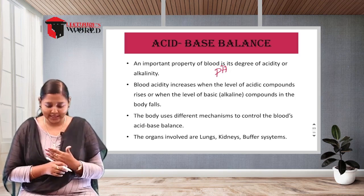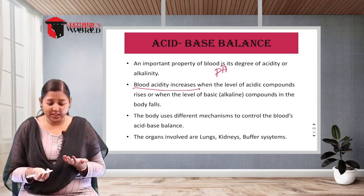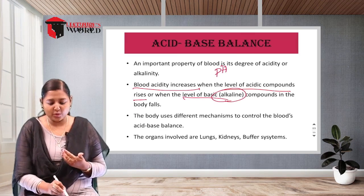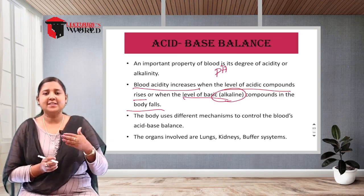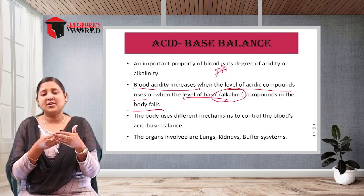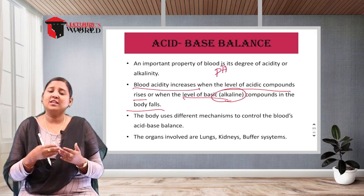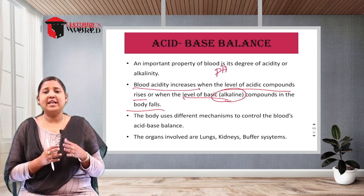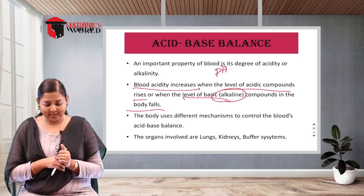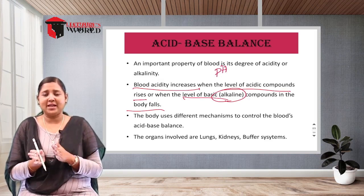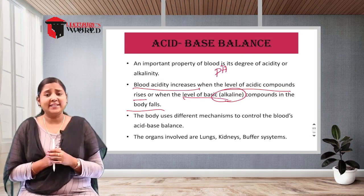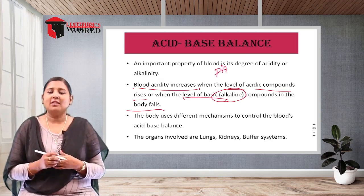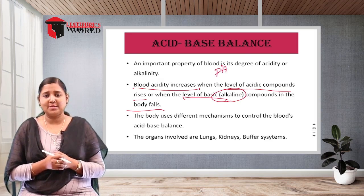When blood acidity increases, acidic compounds in the blood rise and basic (alkaline) compounds fall. When blood is alkaline, alkaline compounds are increased and acidic components are less. The body must maintain a neutral state — not too acidic, not too alkaline. The body uses different methods to control this acid-base balance.